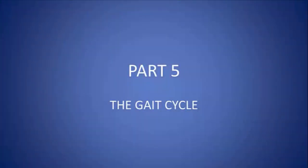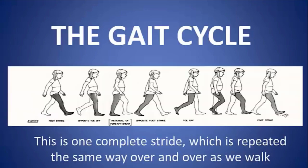This is part five, the gait cycle. The gait cycle is a very critical piece to understanding normal gait and abnormal gait. The gait cycle is one complete stride, which is repeated over and over again as we walk on the level surface.